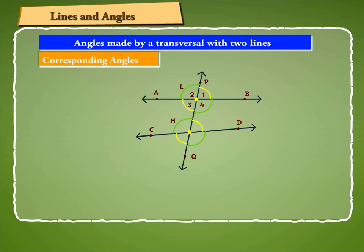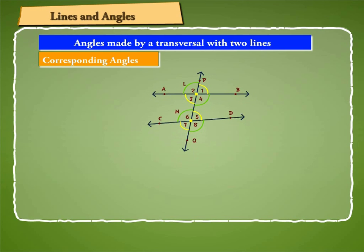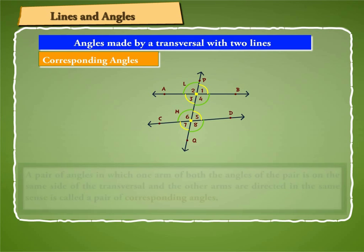In the on-screen figure, each pair of angles — 2 and 6, 1 and 5, 3 and 7, and 4 and 8 — is such that one arm of both the angles of the pair is on the same side of the transversal PQ and the other arms are directed in the same sense. These angles form pairs of corresponding angles.